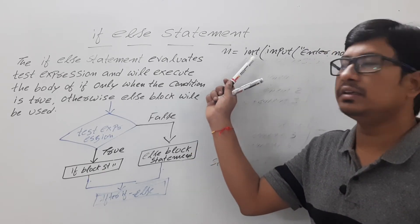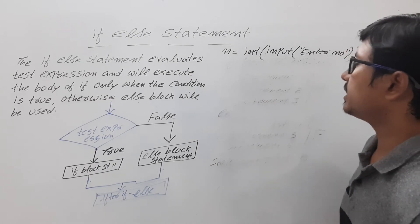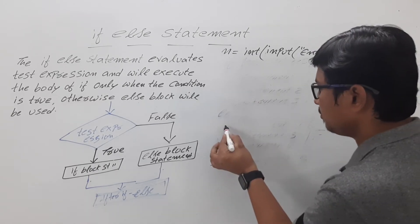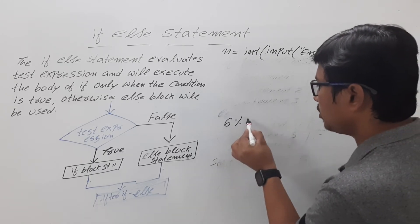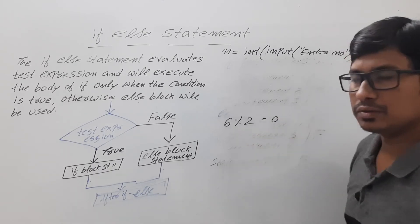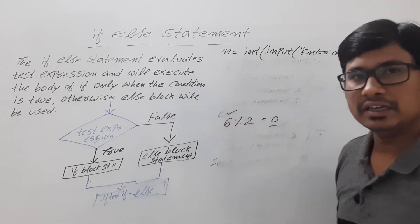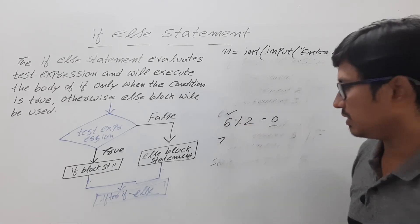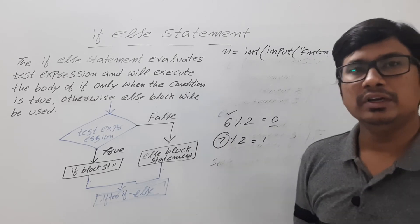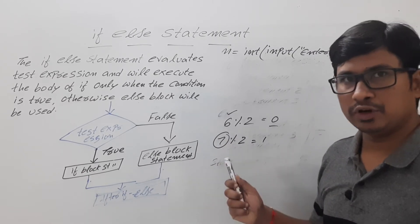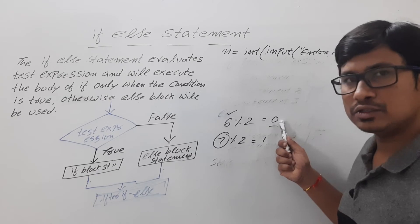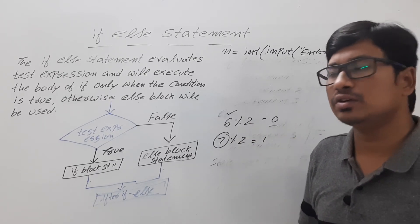When the remainder is 0, the number is even. For example, 6 modulus 2 gives a remainder of 0, so 6 is an even number. For 7 modulus 2, the remainder is 1, so it is an odd number. So if you divide the given number by 2 using modulus division and get a remainder of 0, it is even; if the remainder is 1, it is odd.